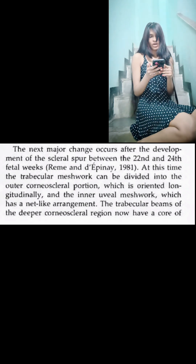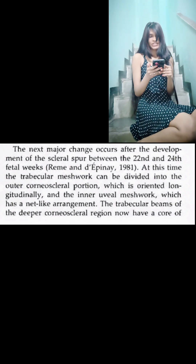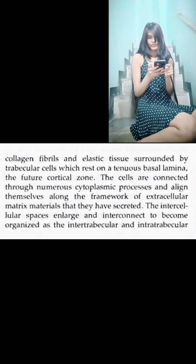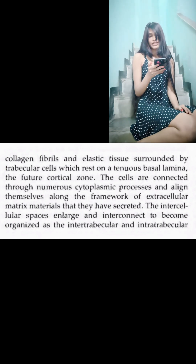The next major change occurs after the development of the scleral spur between the 22nd and 24th fetal weeks. At this time, the trabecular meshwork can be divided into the outer corneoscleral portion, which is oriented longitudinally, and the inner uveal meshwork, which has a net-like arrangement. The trabecular beams of the deeper corneoscleral region now have a core of collagen fibrils and elastic tissue surrounded by trabecular cells.